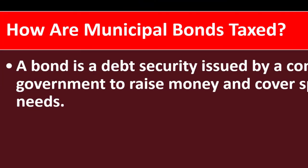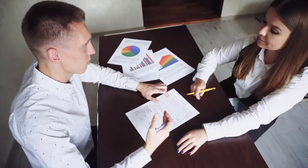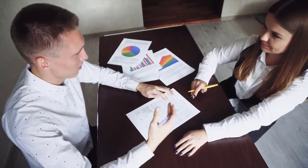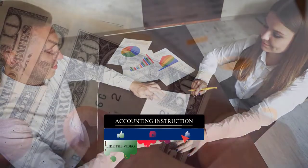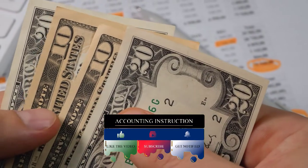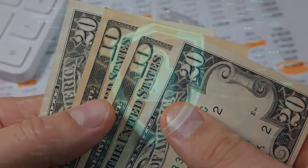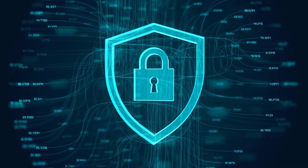A bond is a debt security issued by a company or government to raise money and cover spending needs. It's similar to a promissory note — you're lending them money, they give you the bond, which typically has a maturity date and gives you a return in the form of interest. When we think of bonds from an investment strategy, we often think of government bonds because those are the more secure type of investment, but there are also corporate bonds and many other kinds of bond structures.